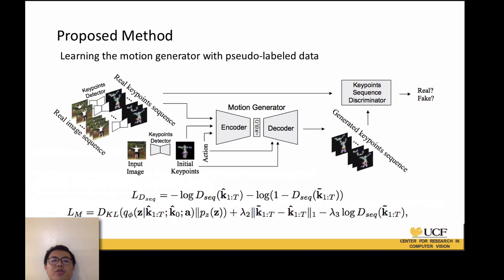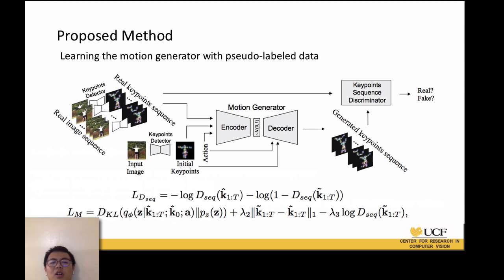Then a motion generator is trained to generate future keypoints. The input is the initial keypoints and the action label. The ground truth of future frame keypoints is generated by the keypoint detector. They build a conditional variational autoencoder framework and also apply an adversarial training step.